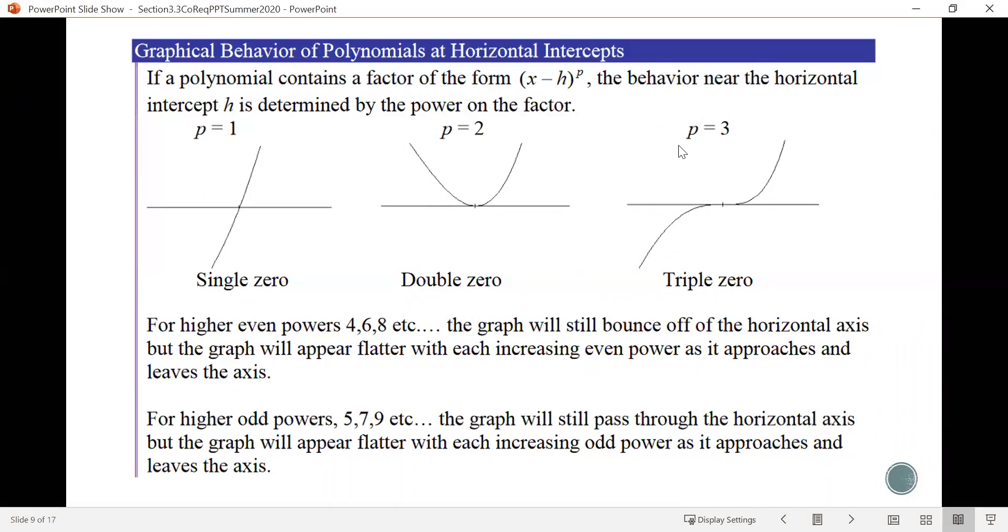Okay, so the multiplicity of a root actually tells us what happens in the graph at that point. So as you can see here, we're looking at if we have a factor of the form x minus h to the p, where p is the power, these graphics here show us what happens at different points depending on the power there. So for example, if the multiplicity of a root is 1, then what happens at where it crosses the horizontal axis is that the graph is more or less just going to cut straight through it. So it's going to do something like that first one.